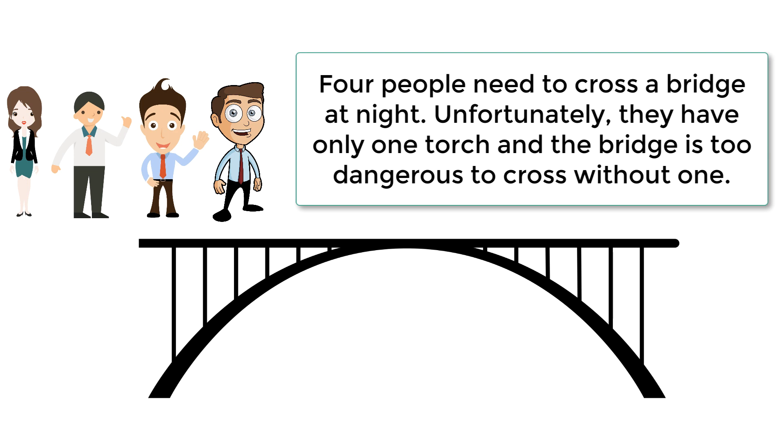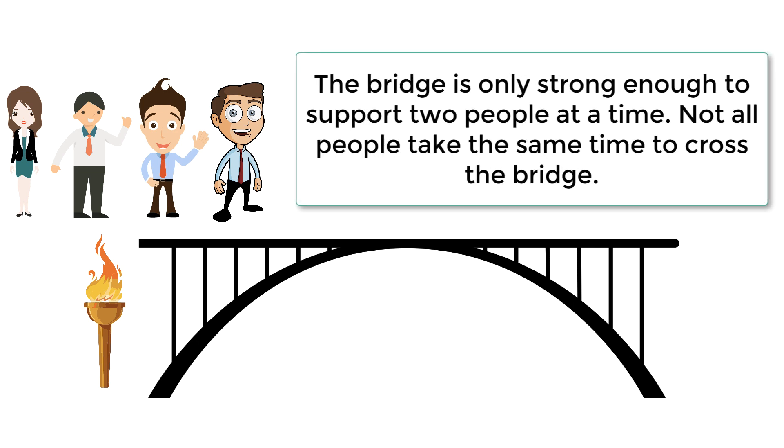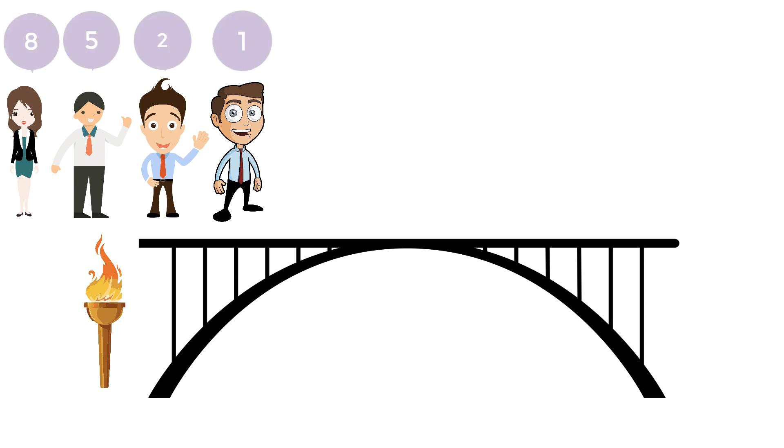Four people need to cross a bridge at night. Unfortunately, they have only one torch and the bridge is too dangerous to cross without one. The bridge is only strong enough to support two people at a time. Not all people take the same time to cross the bridge. A takes one minute to cross the bridge, B takes two minutes to cross the bridge.